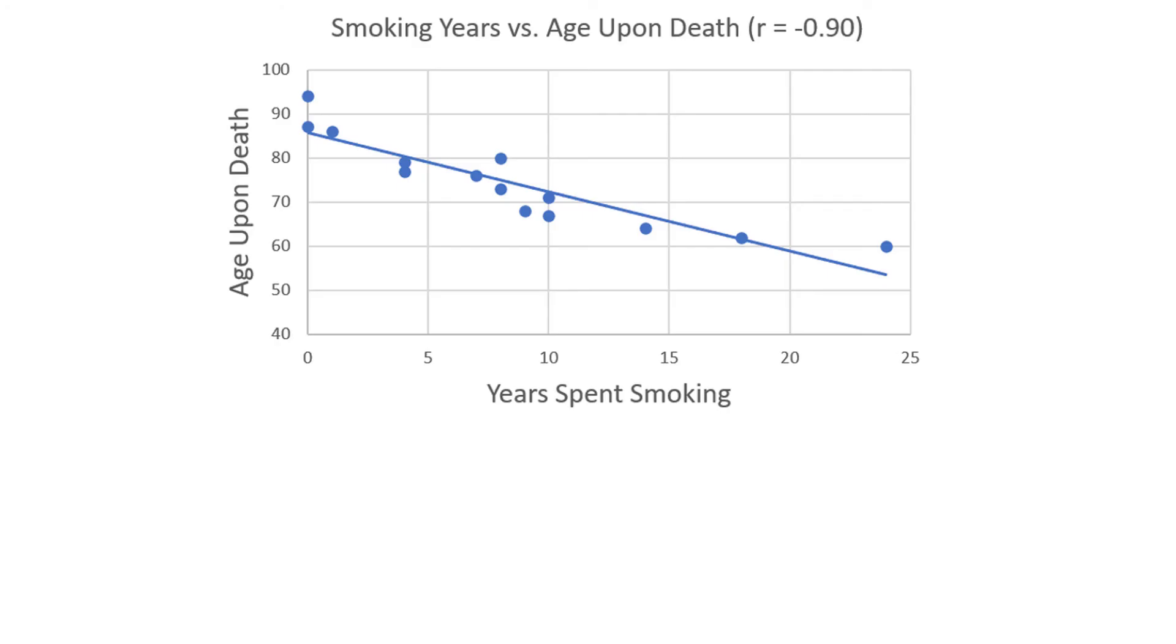Consider this scatter plot, which plots the number of years spent as a smoker on the horizontal axis, and age upon death on the vertical axis. The data only includes deaths of individuals after age 60, to rule out most accidental deaths. Note that the vertical axis starts at 40 instead of 0, which can sometimes be misleading, but can also help the data cover the area of the scatter plot, creating a better picture.